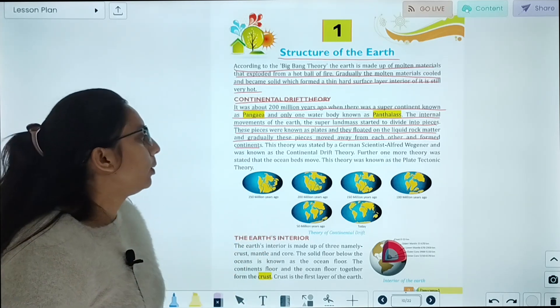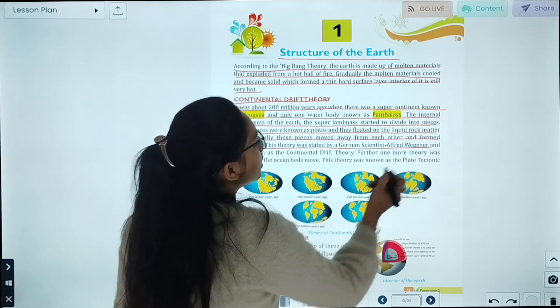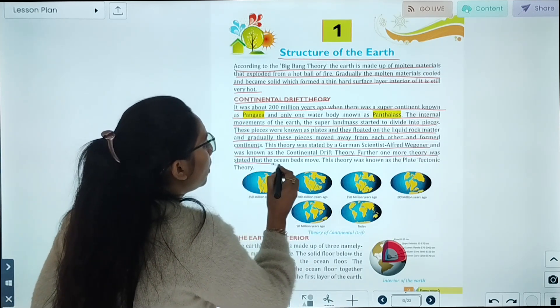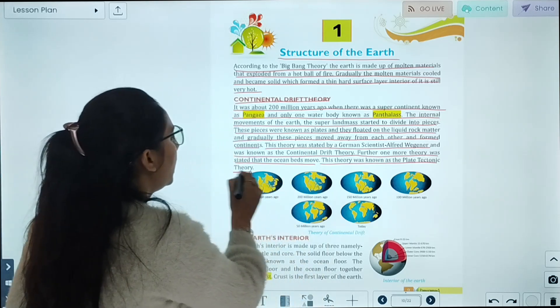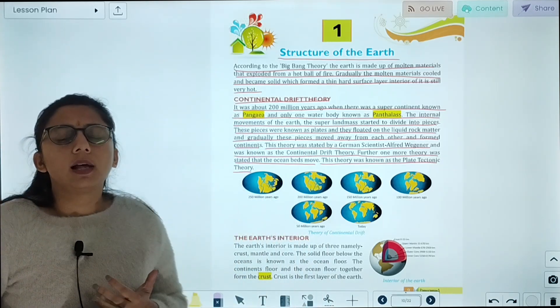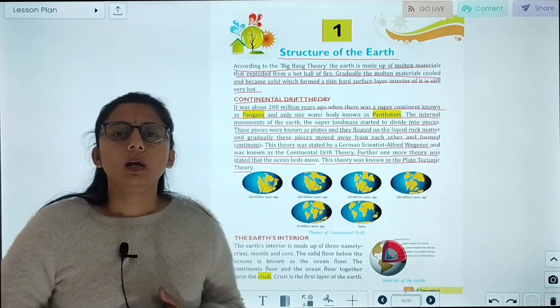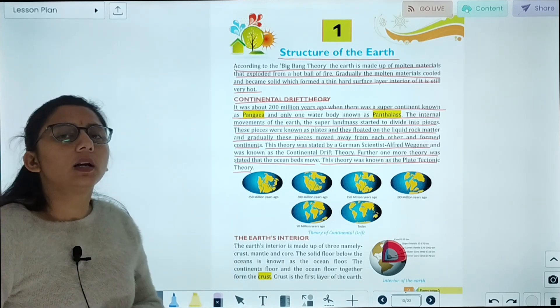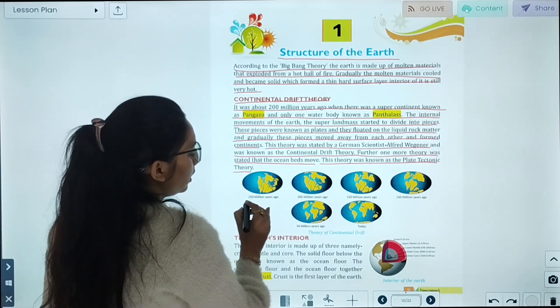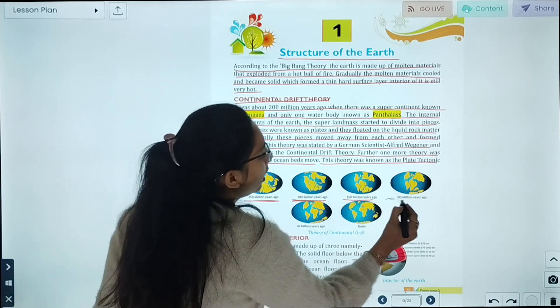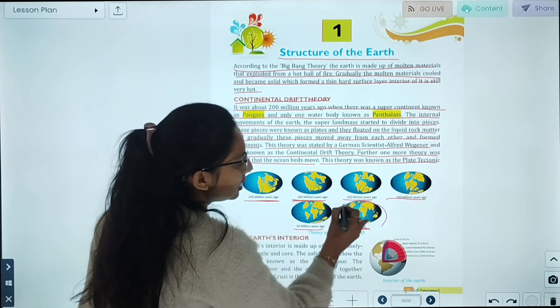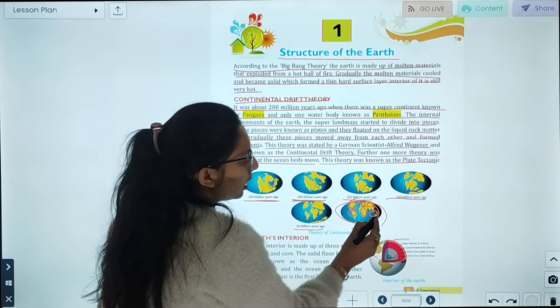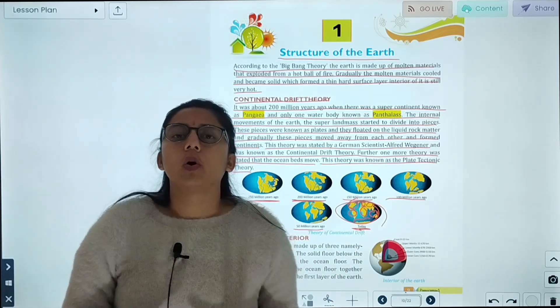This story was stated by German scientist Alfred Wegener and was known as Continental Drift Theory. Further, one more theory was stated about the ocean. This theory was known as Plate Tectonic Theory. First it was one continent 150 million years ago, then it broke into pieces, and today we have seven continents: North America, South America, Africa, Europe, Asia, Australia, and Antarctica.